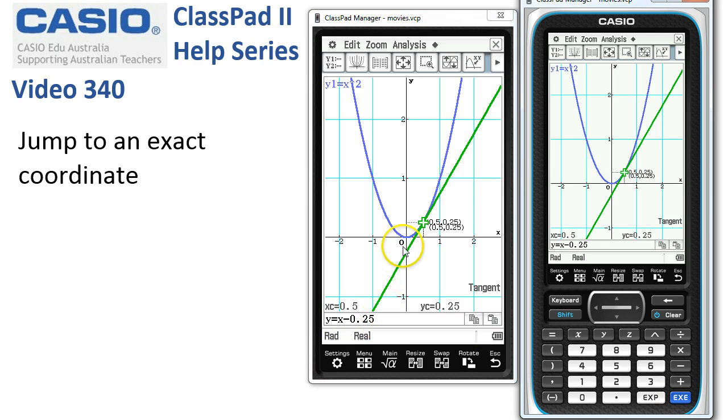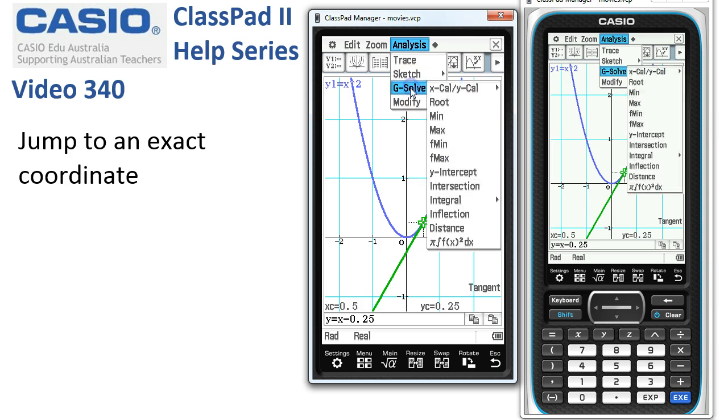If we wanted to go to a point on the graph to find where the y coordinate, maybe it was 1.5, and we wanted to know what the x coordinate was, then we can use analysis G-Solve, and we've got the x calc, y calc.